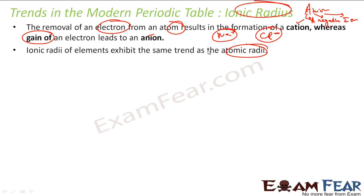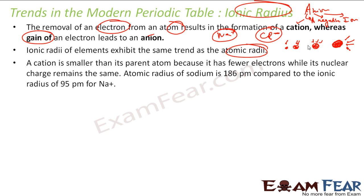Ionic radius also exhibits similar trends as atomic radius, because the overall concept is the same. The only extra thing is that the ion has got a charge. It has protons and electrons; the electrons get attracted by the protons. If you go along the period, the proton's power increases, they attract electrons more, and the atom shrinks. If you go down the group, shells are added and the size increases. Same concept.